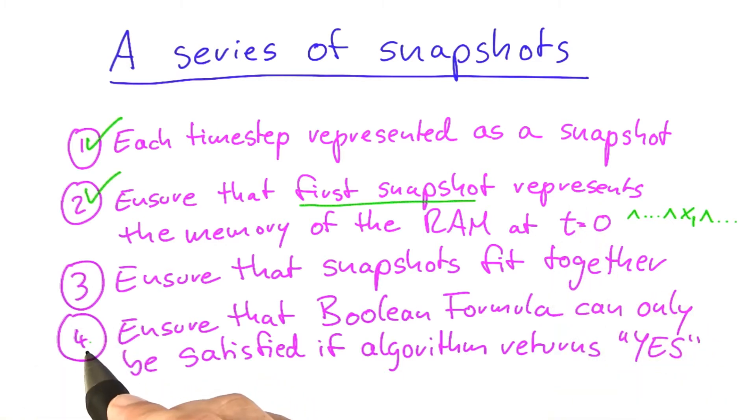The fourth one here, that the Boolean formula can only be satisfied if the algorithm returns yes, is also not that difficult to check. Because again, using a technique like this here, all we have to do is ensure that at a certain point in time,